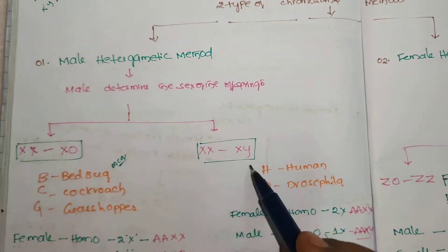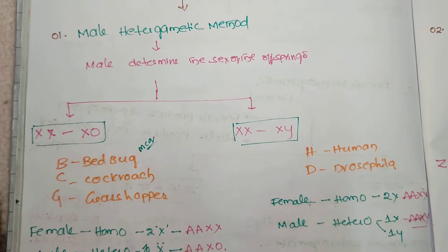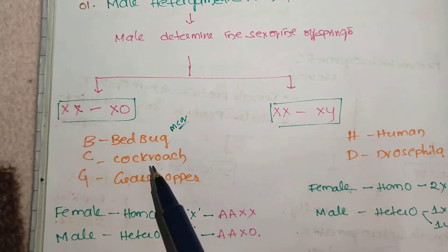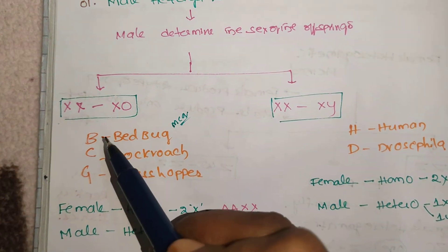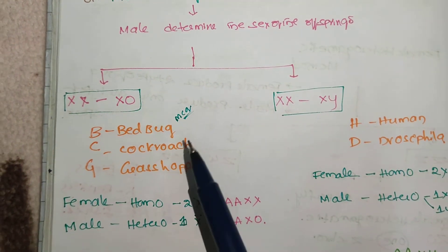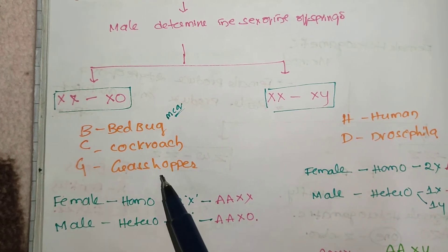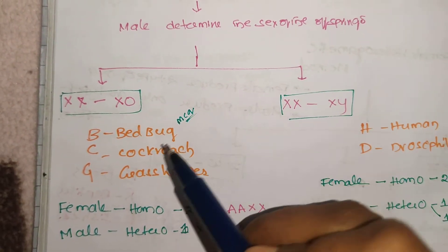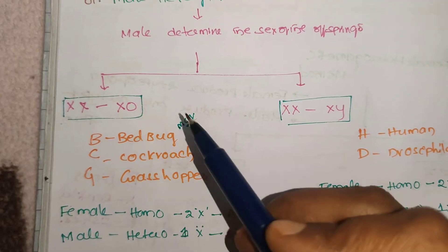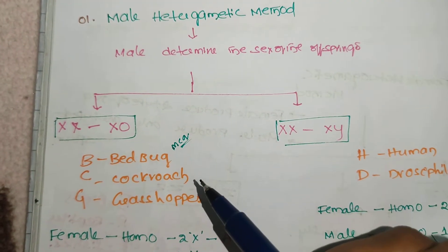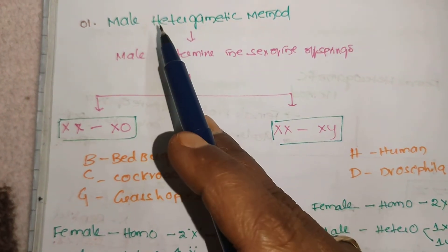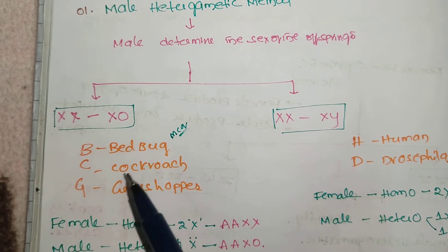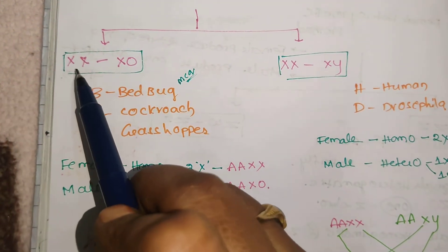Within male heterogametic, there are again two types: the XO type and the XY type. In the XO type, it is seen in three organisms — Bedbug, Cockroach, and Grasshopper. Remember them like the vaccine BCG: B for Bedbug, C for Cockroach, G for Grasshopper. This is very important for MCQs in M-set and NEET. In the XO type (BCG organisms), females are homogametic, having two X chromosomes.